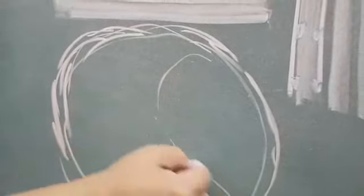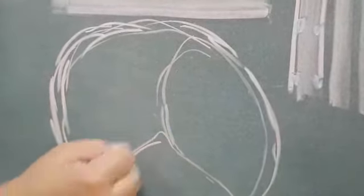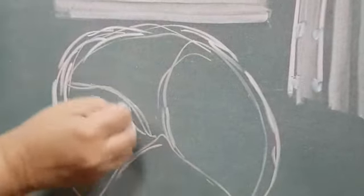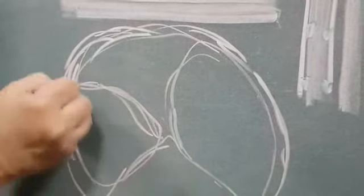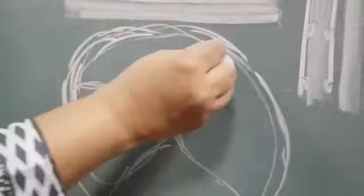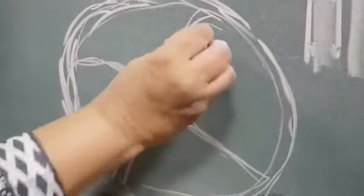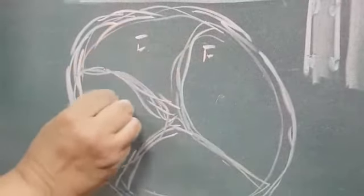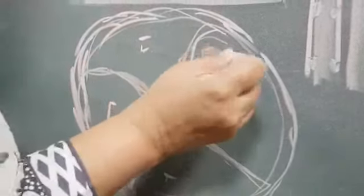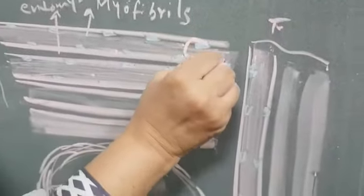And inside, you can draw these fascicles, which are separated from each other by perimysium. So, this is the perimysium. And within each bundle of fascicles, this is one fascicle, another fascicle, another. And within each fascicle, there are the cut sections of these muscle fibers.